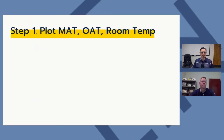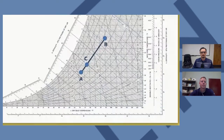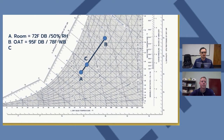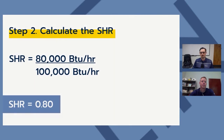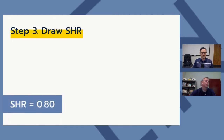The process has three steps. Step one: plot the mixed air temperature, supply air temperature, and room temperature on the psych chart — points A (room conditions, 72°F/50% RH), B (outside air, 95°F/78wb), and C (mixed air, 77.8db/65wb). Step two: calculate the SHR — 80,000 divided by 100,000 equals 0.8.